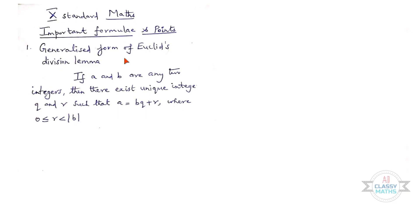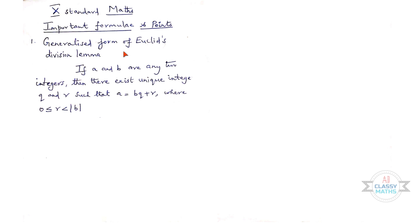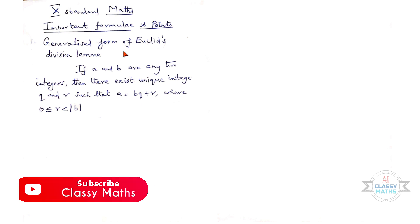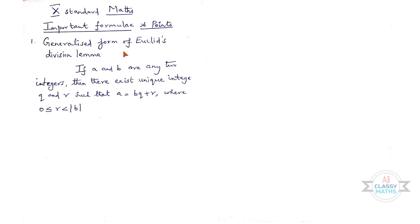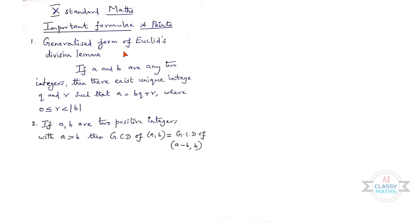First one: Generalized form of Euclid's Division Lemma. If a and b are any two integers, then there exist unique integers q and r such that a = bq + r, where r is greater than or equal to 0 but less than the modulus of b. This is Euclid's Division Lemma.